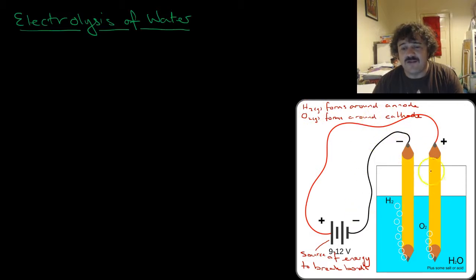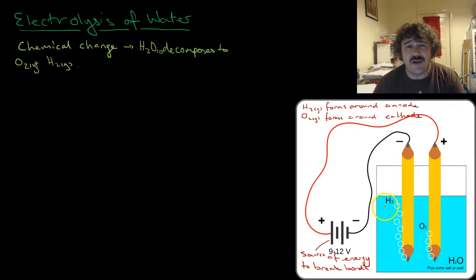When we run electricity through it, that's a lot of energy compared to just a little bit of sunlight. What we have around the cathode, which is the positive electrode, will have oxygen forming. Around the negative electrode, which is the anode, same as cation and anion, will have hydrogen gas forming. A chemical reaction happens. It is a decomposition reaction. H2O decomposes to oxygen and hydrogen.